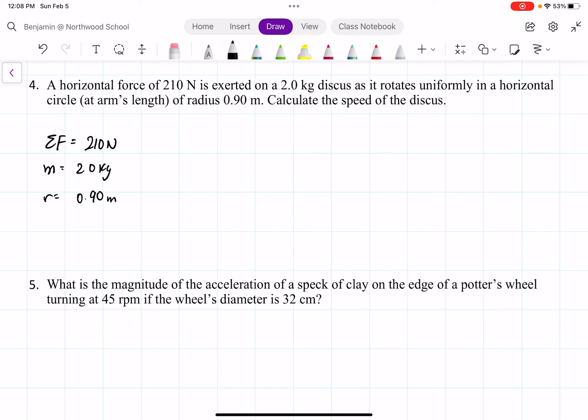And we know that the centripetal acceleration is v squared over r, where we have the net force equal to m a_r, which equals m v squared over r.